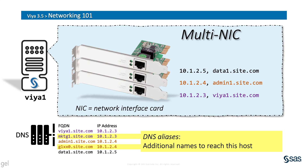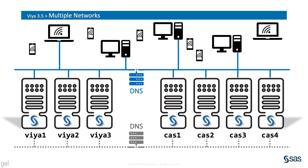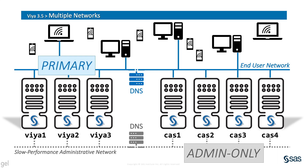Before we answer that, let's see a couple of example topologies. Returning to our network diagram, let's add a second network. This illustrates a Viya host with at least two NICs and two IP addresses. The gray dotted line at the bottom is intended for IT administrative use only — it's running on relatively slow infrastructure. This means the original blue network at the top, which connects the Viya servers with the end users, will be the primary network used for all Viya traffic. While we need to configure Viya to work properly with two networks like this, we're pretty much just ignoring the admin network.